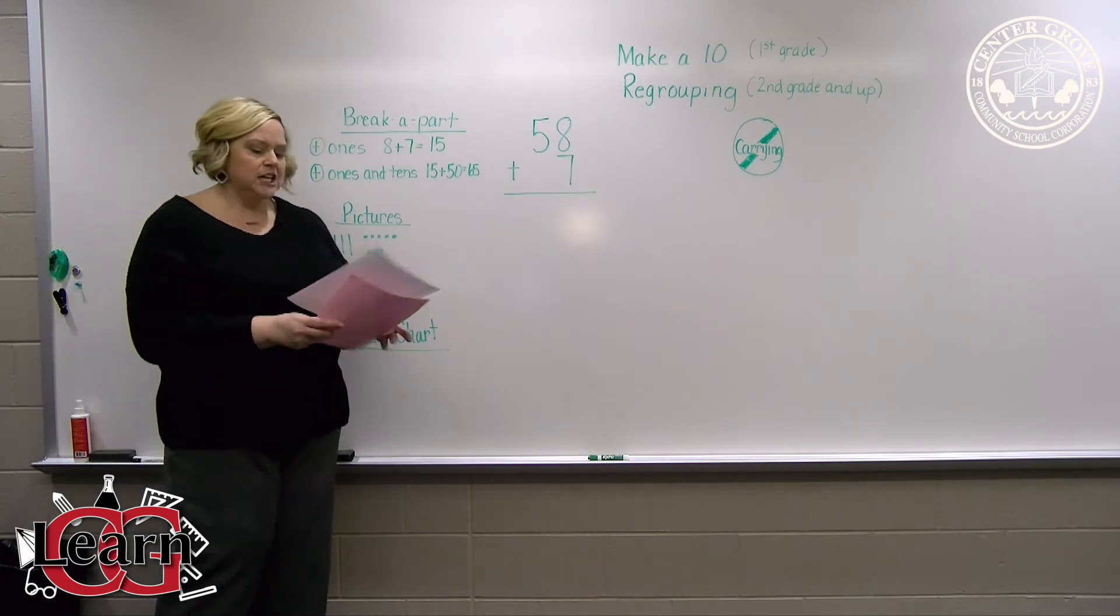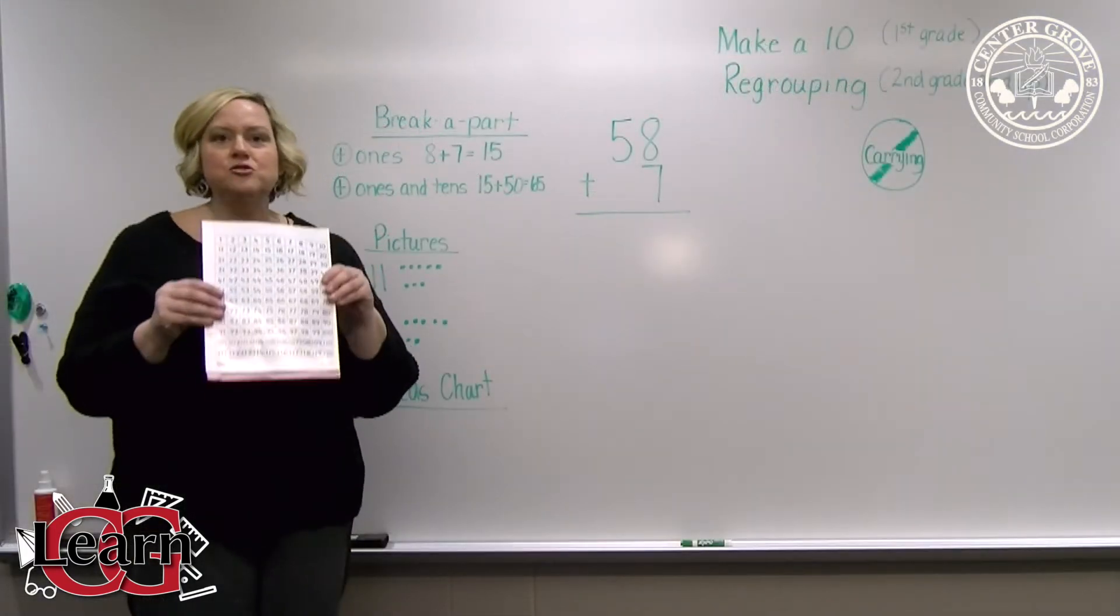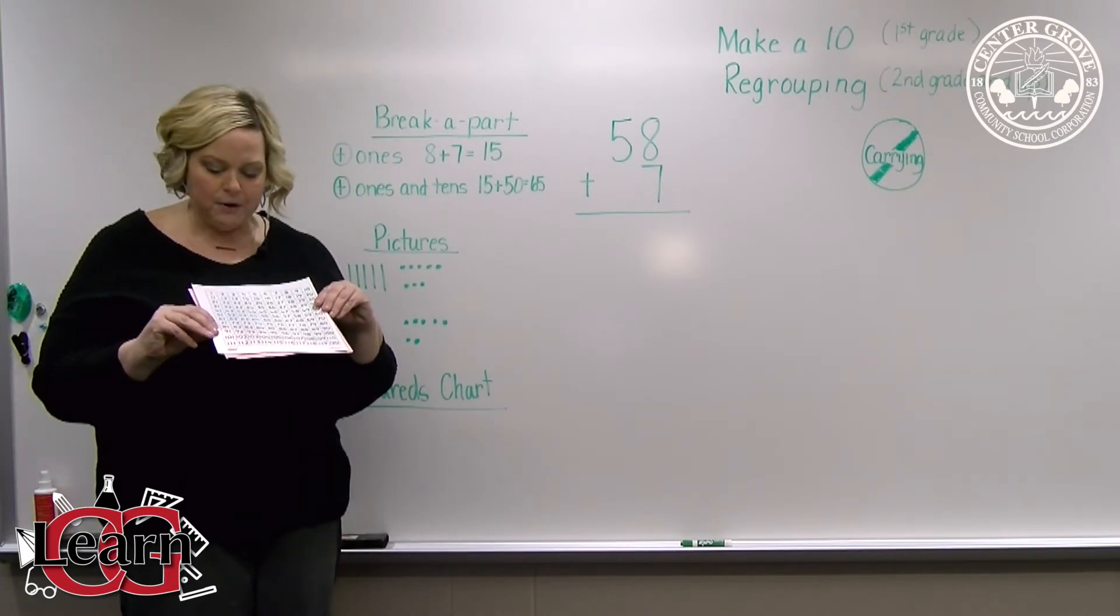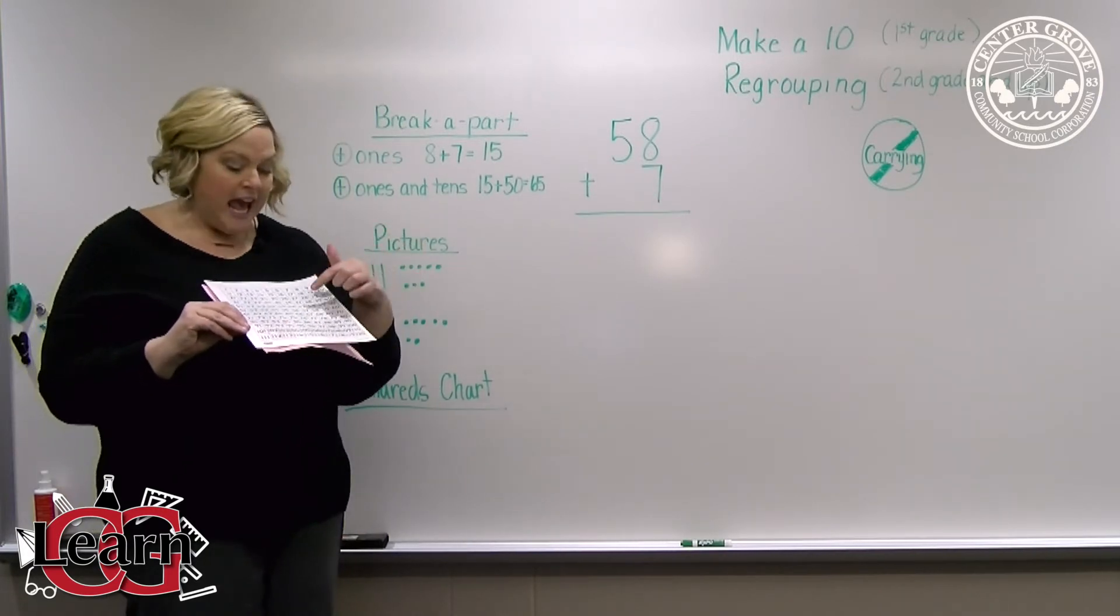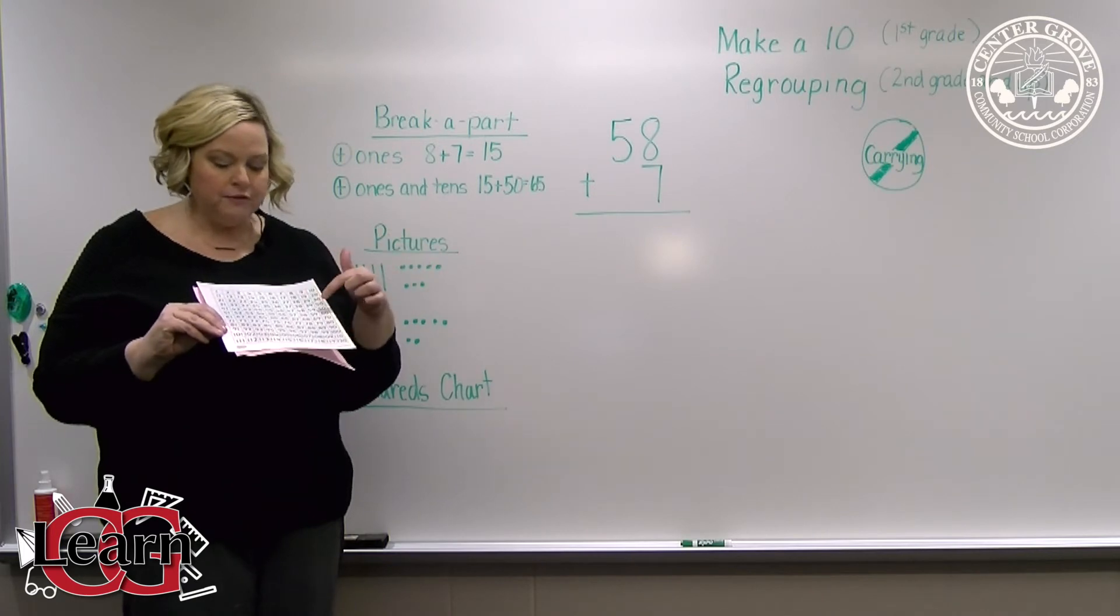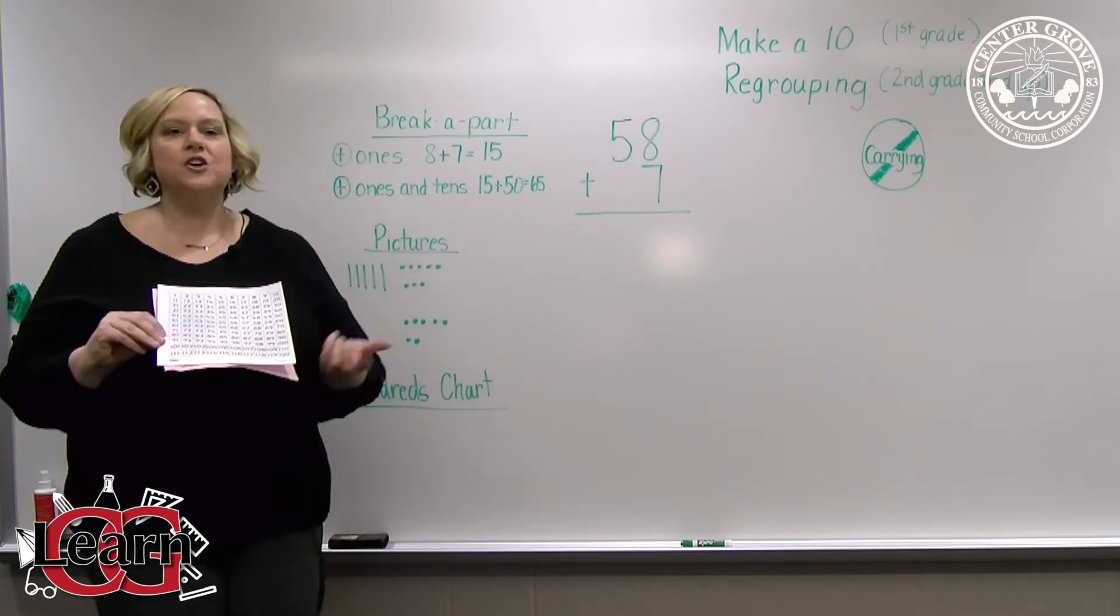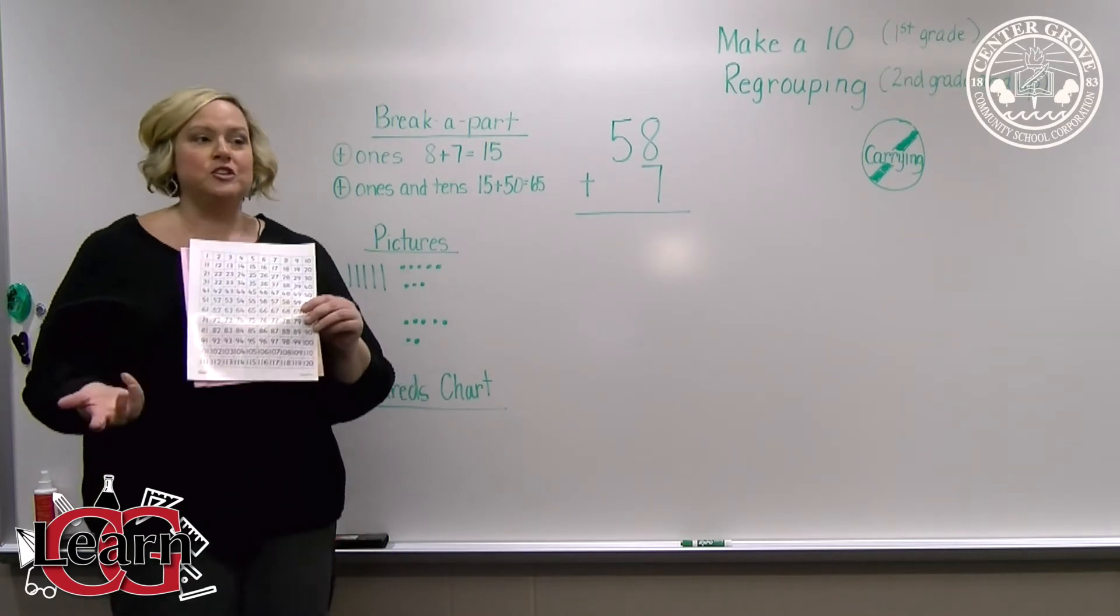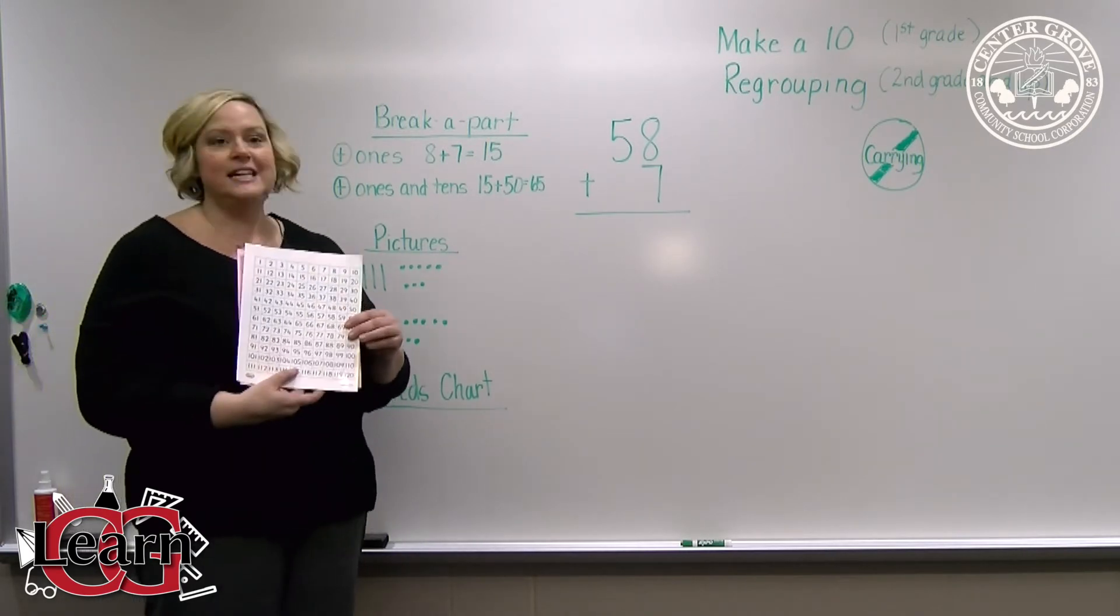The first one is to use a 120 chart. We teach this in class. They will start at the bigger number, 58, and they will simply move their fingers seven spaces until they land on 65. All of our first graders have hundreds charts on their desks, so they may use this at any time.